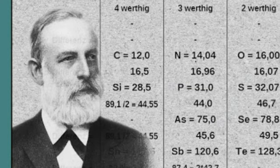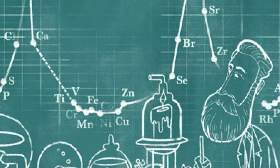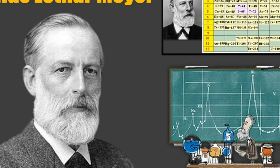After attending the Alts Gymnasium in Oldenburg, he studied medicine at the University of Zurich in 1851. Two years later, he studied at the University of Würzburg, where he studied pathology as a student of Rudolf Verkau. He studied under Karl Ludwig in Zurich, which prompted him to devote his attention to physiological chemistry.